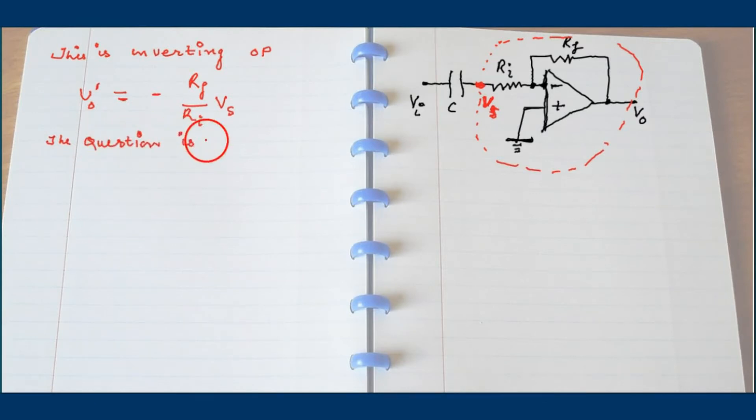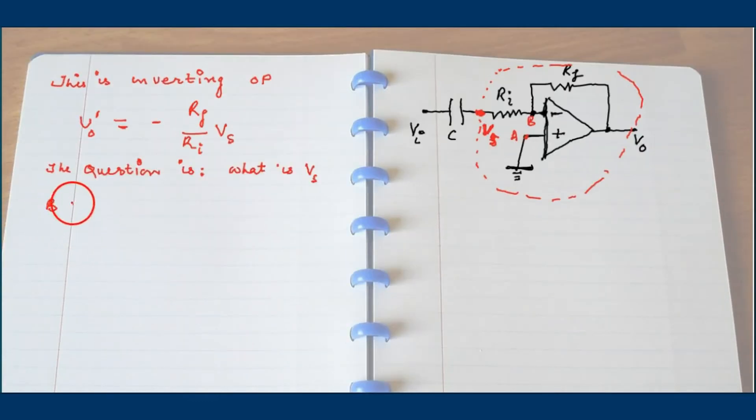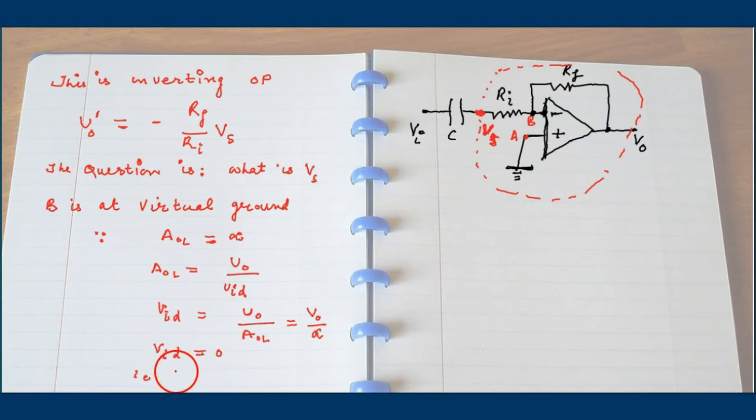Now the question is what is Vs when VI is applied? This is very important. What is the Vs value if VI is given to us? B will be at the virtual ground. If A is at ground level, B will be at the virtual ground. The open loop gain is infinity and open loop gain means output upon input, input means the differential signal. The differential signal is V0 over infinity, something over infinity is zero. So differential voltage is zero, that means VA equals VB.